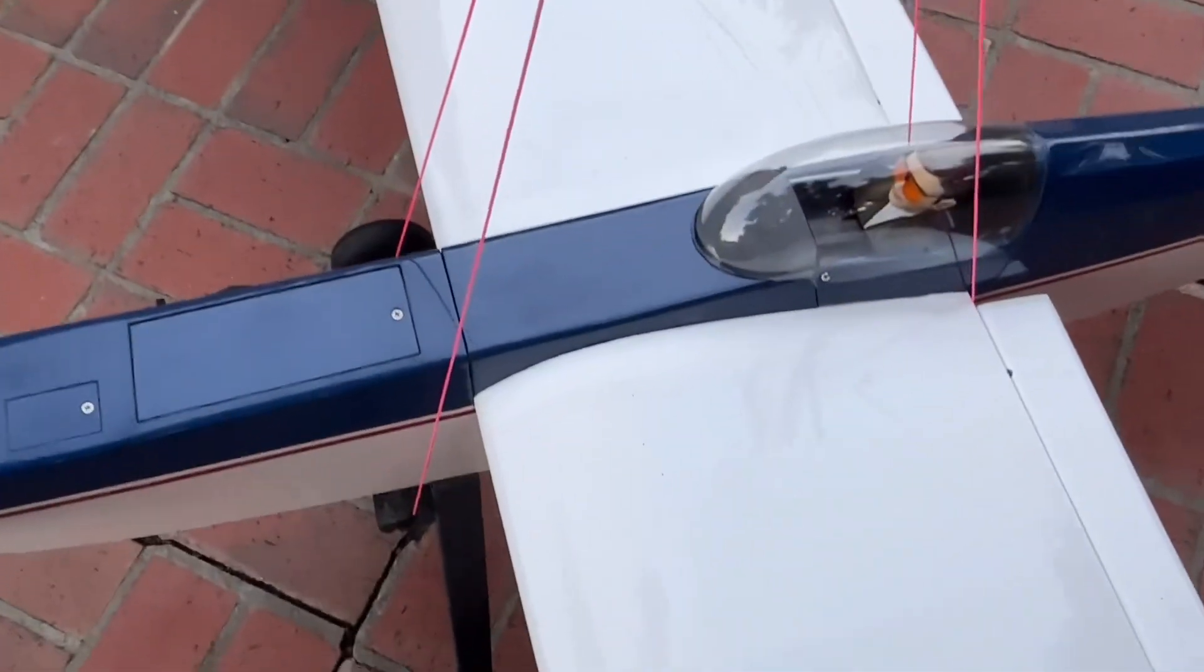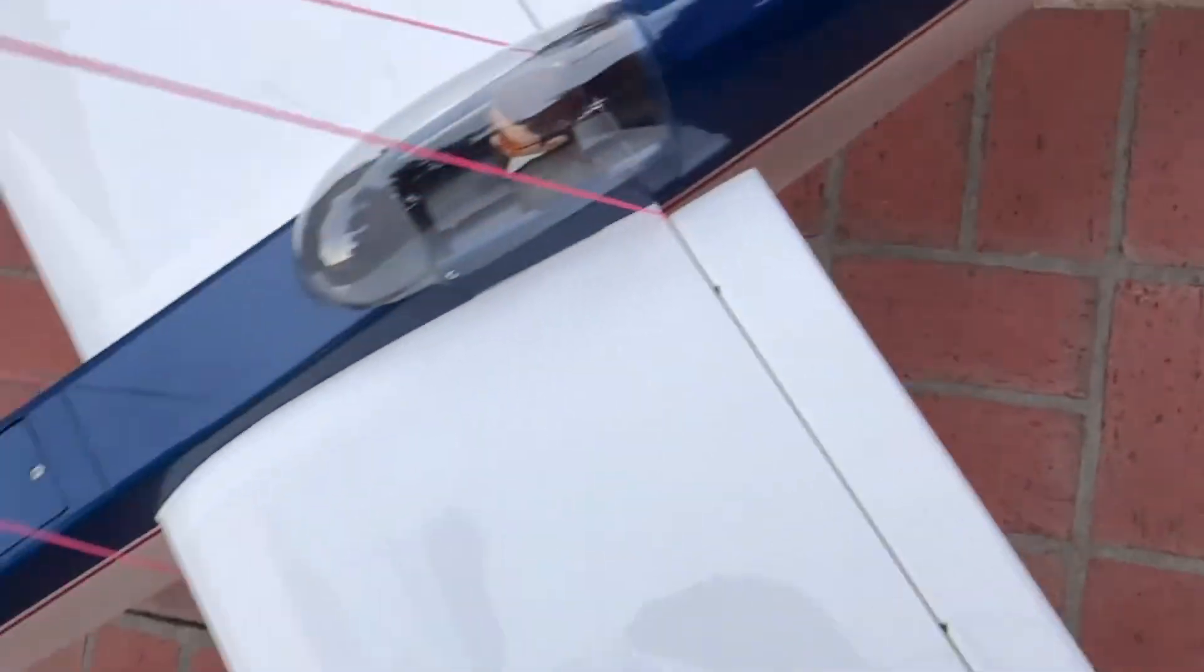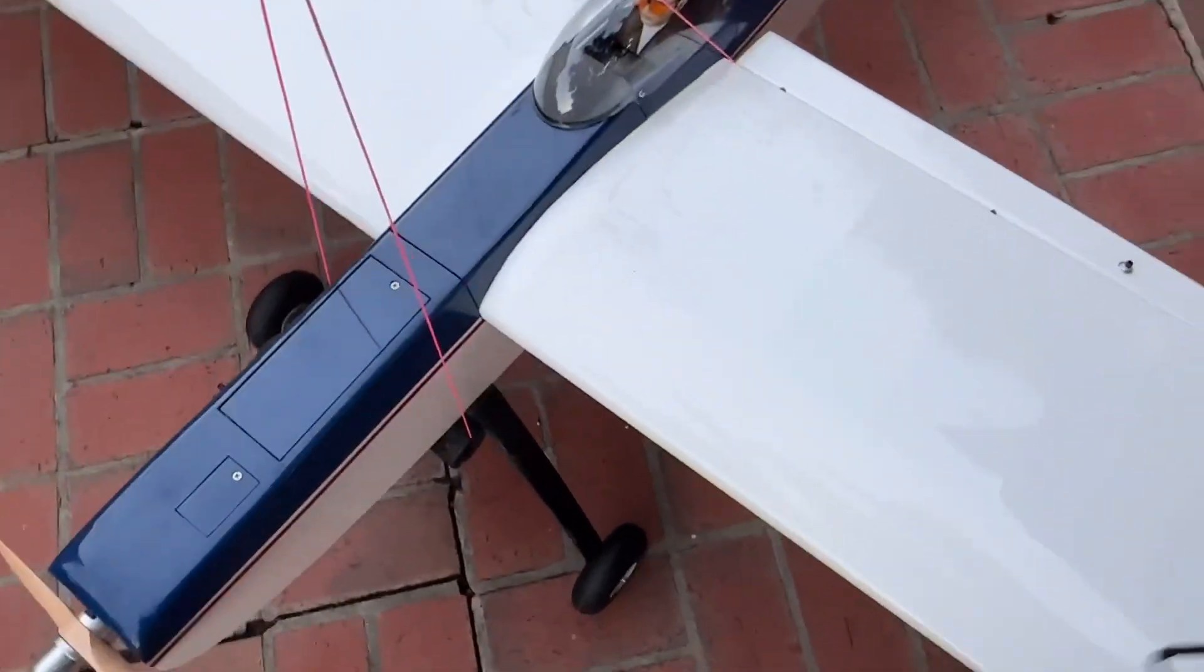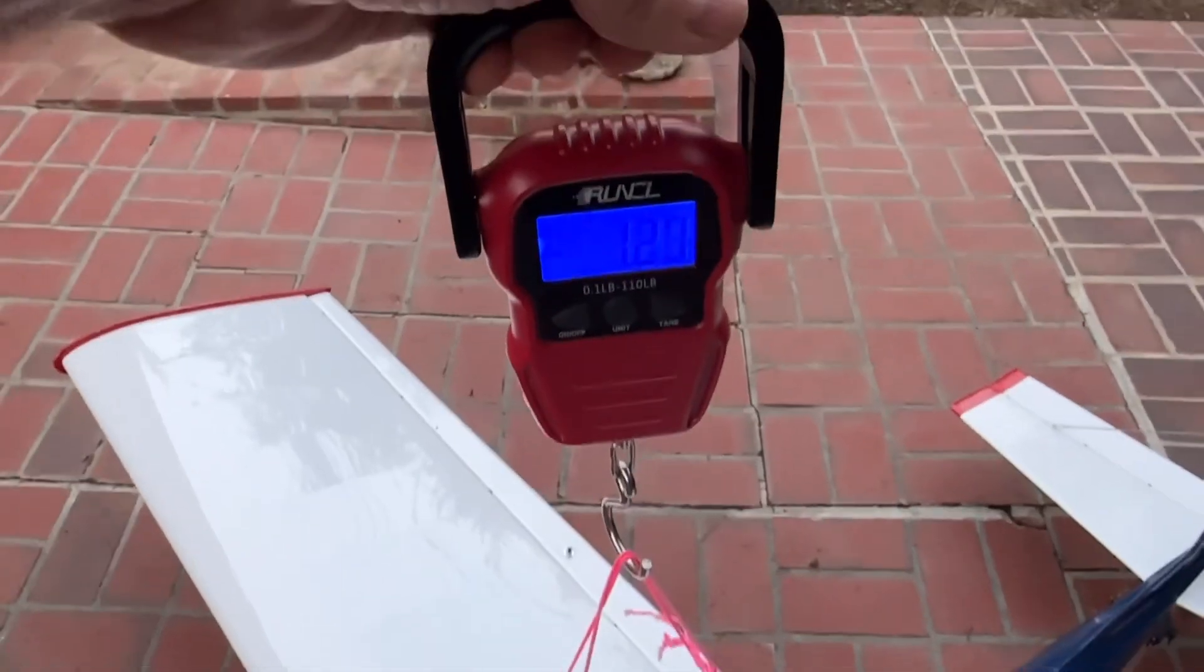And then I have a couple strings going down to the fuselage and I'm using some of this insulation foam so I don't damage the fuselage itself as I pull it up. In fact, I got to pull this one forward a little bit. Alright, so let's go ahead and pull it up. Here we go.